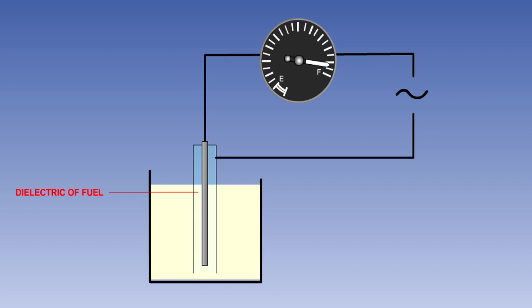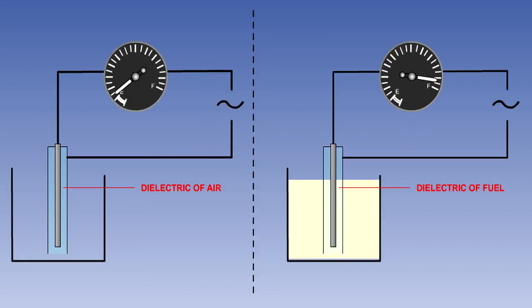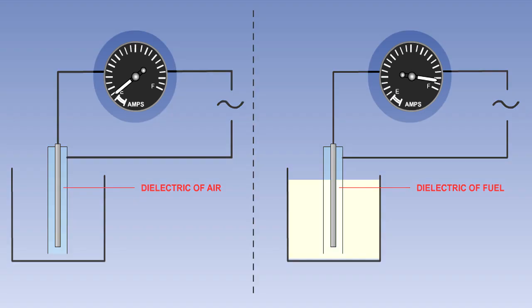A dielectric consisting of fuel will allow more current to flow in the circuit than a dielectric of air will. The level of current flow will therefore be proportional to the volume of the fuel in the tank. By measuring this current, we can know the volume of the fuel in the tank.